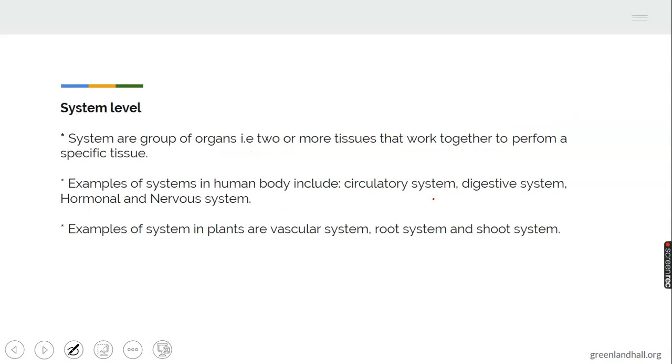Systems. Systems are a group of organs, or a collection of organs, that come together to perform a specific function. Example of organs in man will have the circulatory system, the digestive system, the hormonal system, the nervous system, the reproductive system, and so on. In plants, systems could be the vascular system, the root system, and the shoots system.